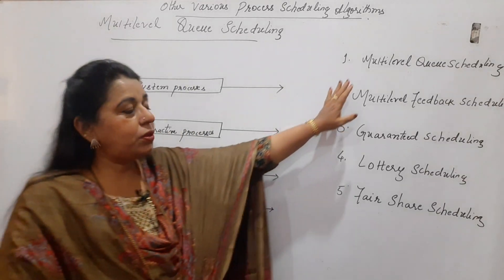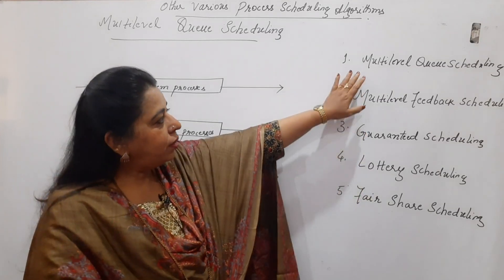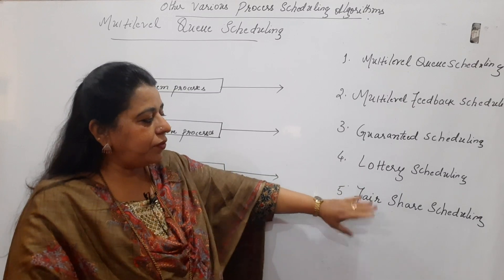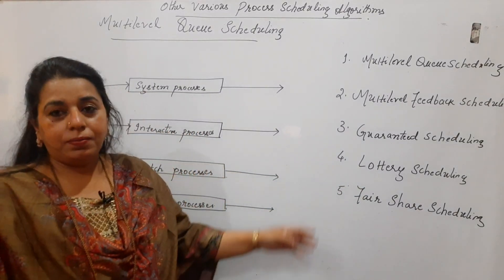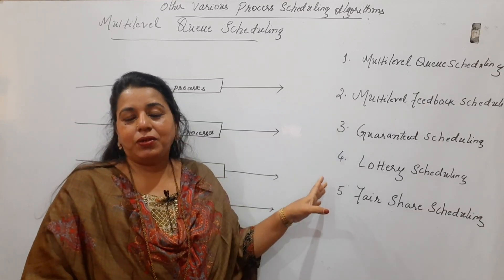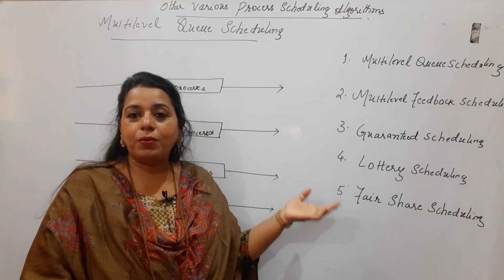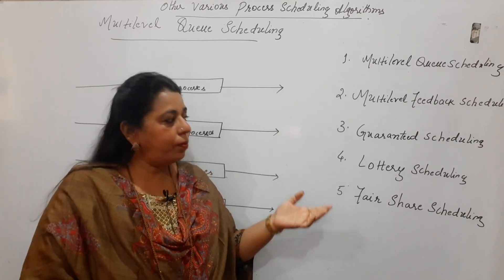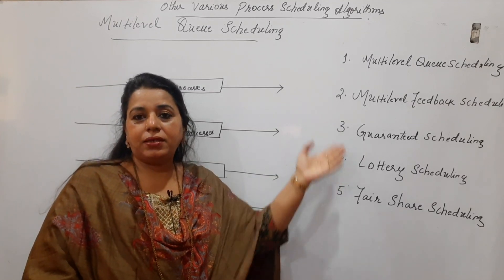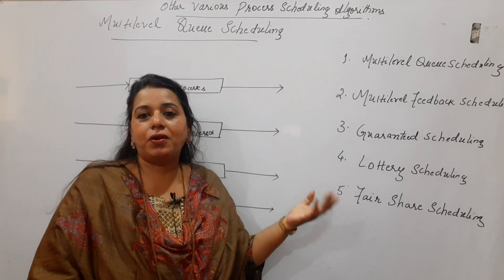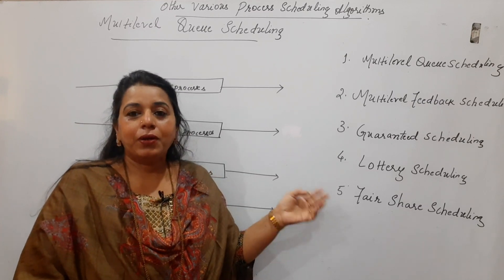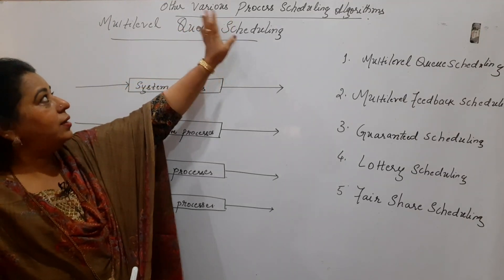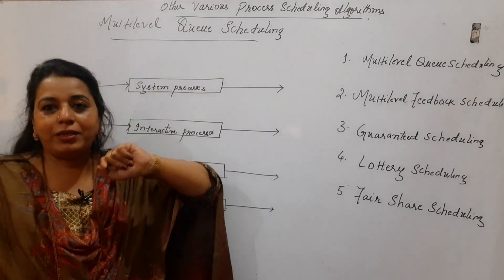Apart from those, there are other scheduling algorithms. I have written them here on the board: Multi-Level Queue Scheduling, Multi-Level Feedback Scheduling, Guaranteed Scheduling, Lottery Scheduling, and Fair Share Scheduling. Numericals will not be asked on these, but you should know the logic — how each works — so you can write a descriptive answer if a question is asked.